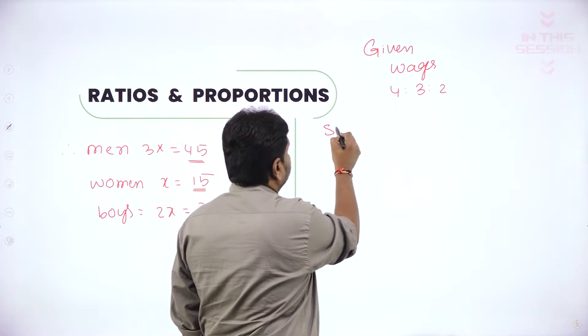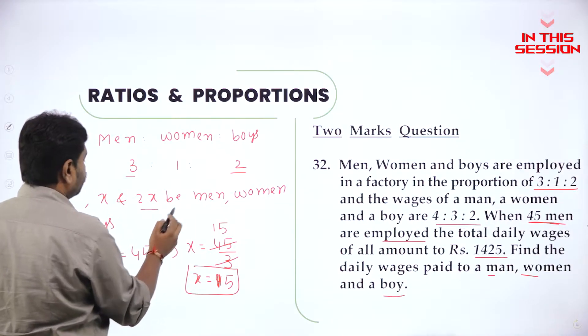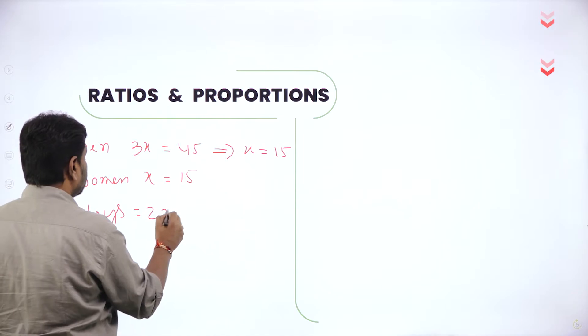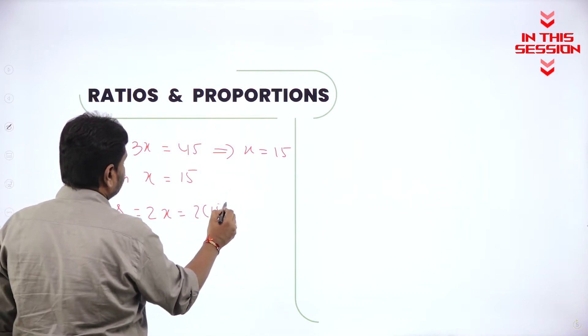What is the sum of ratio of wages? Y's ratio is 2. 2x we assume. 2x means 2 into x, that is 2 into 15. 2 into 15 is 30.